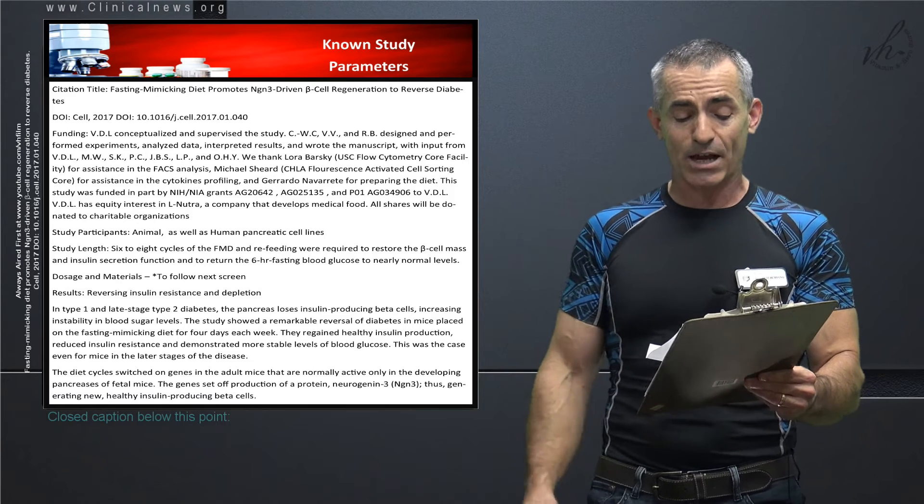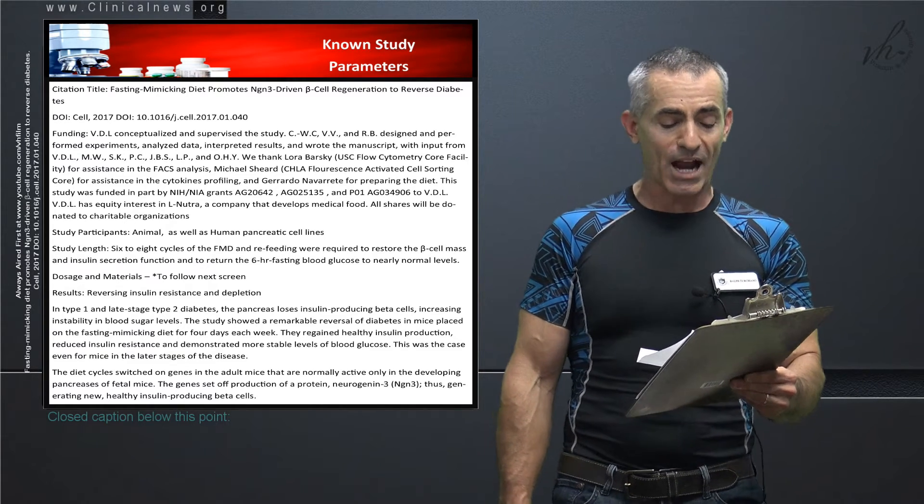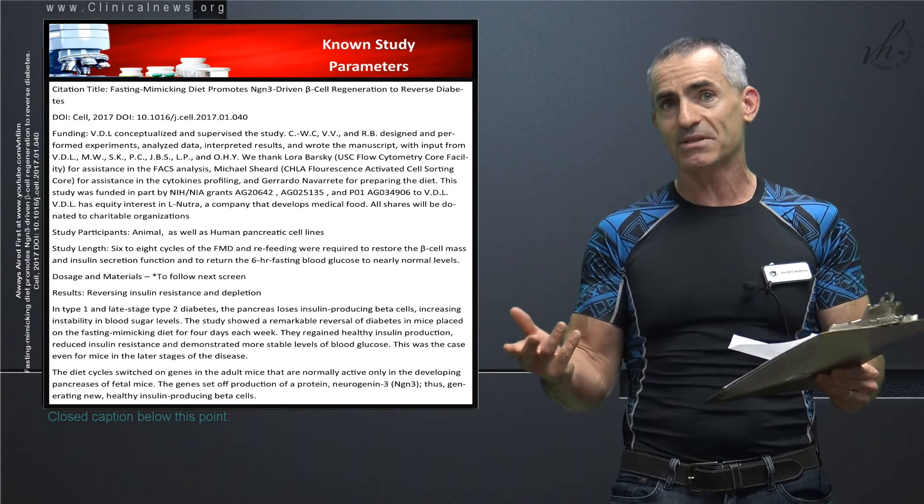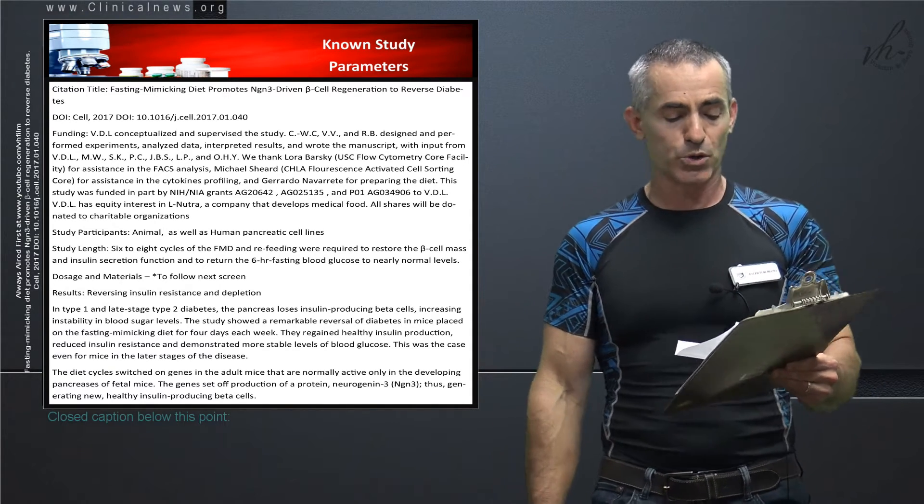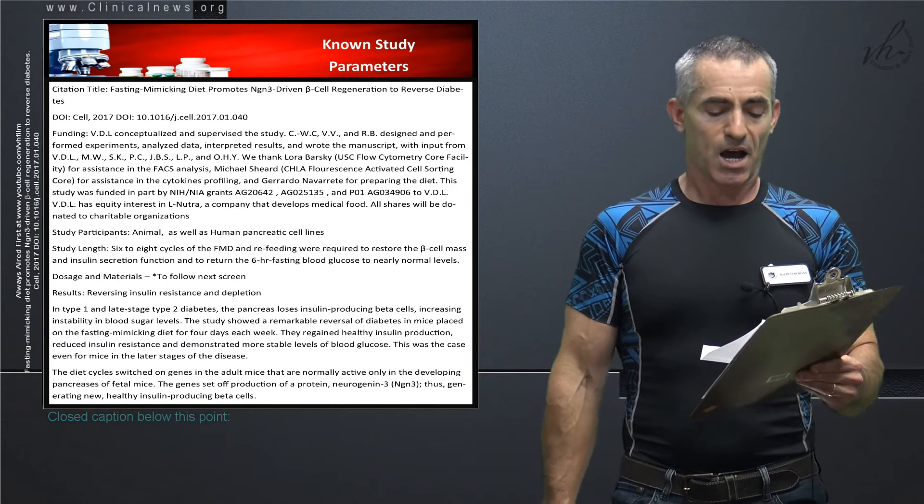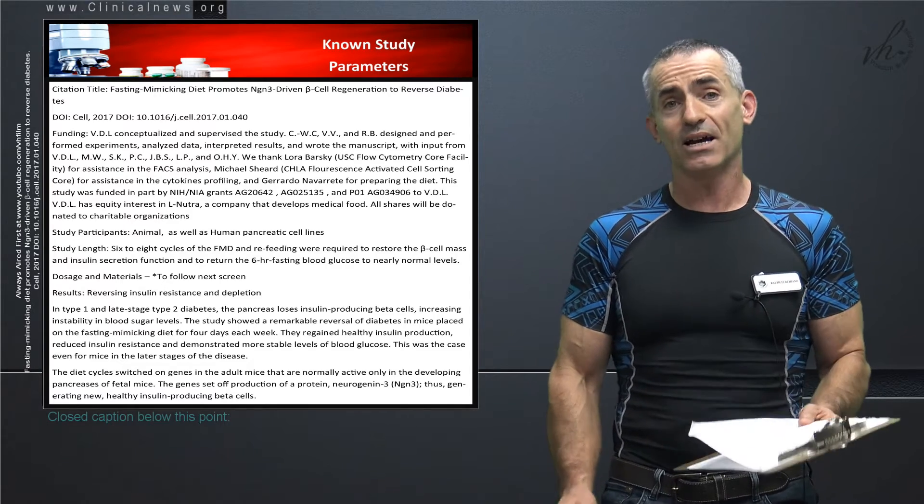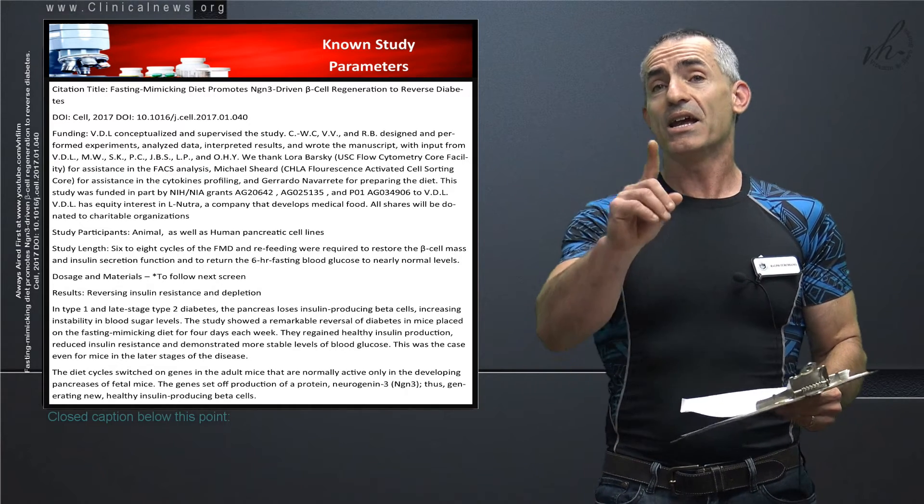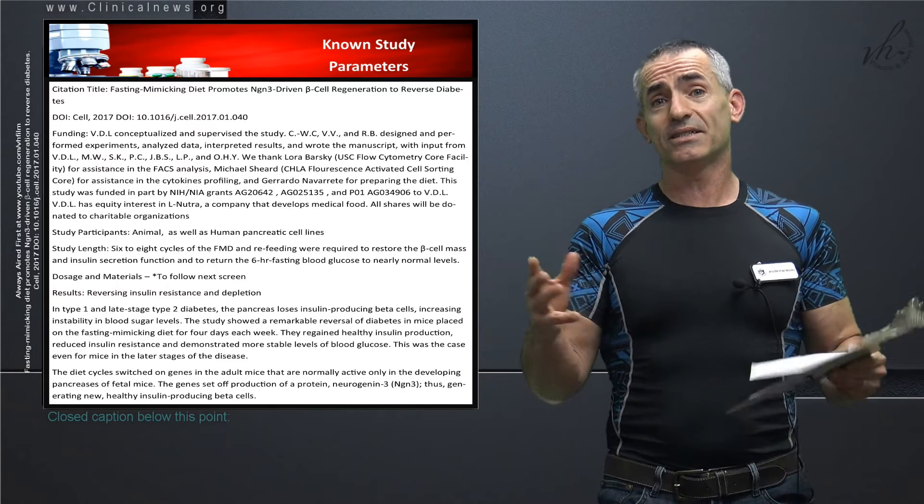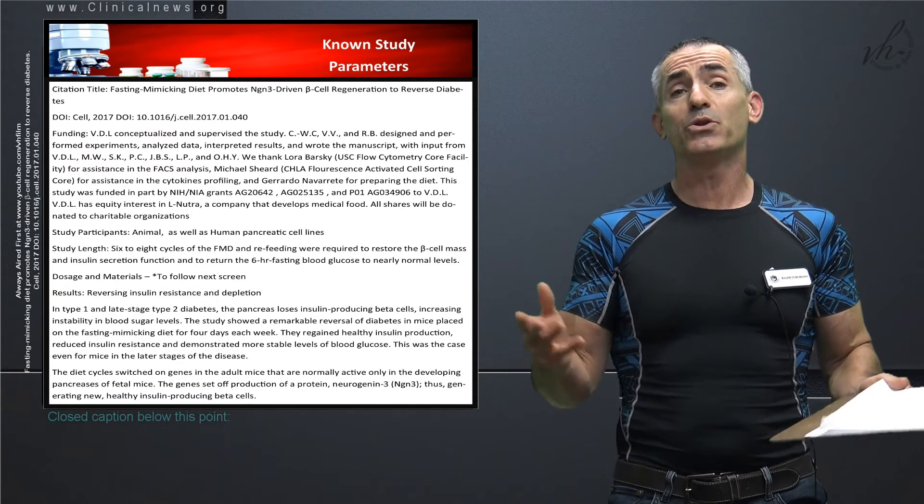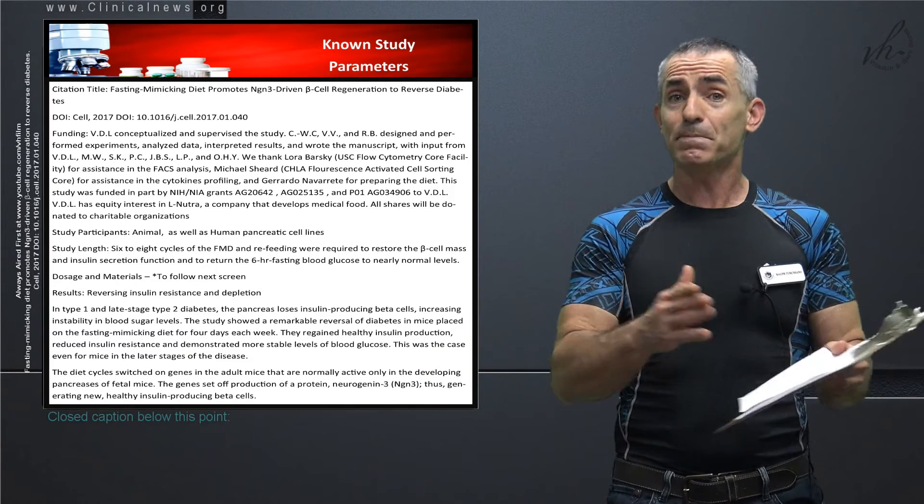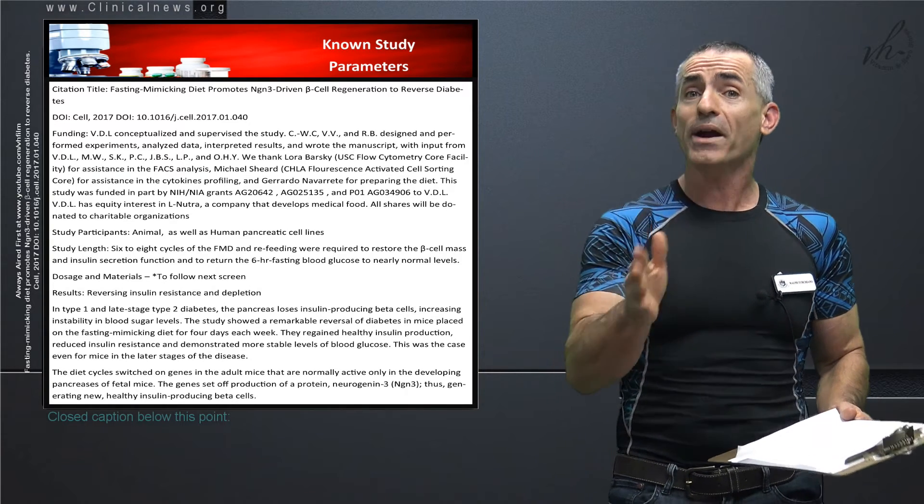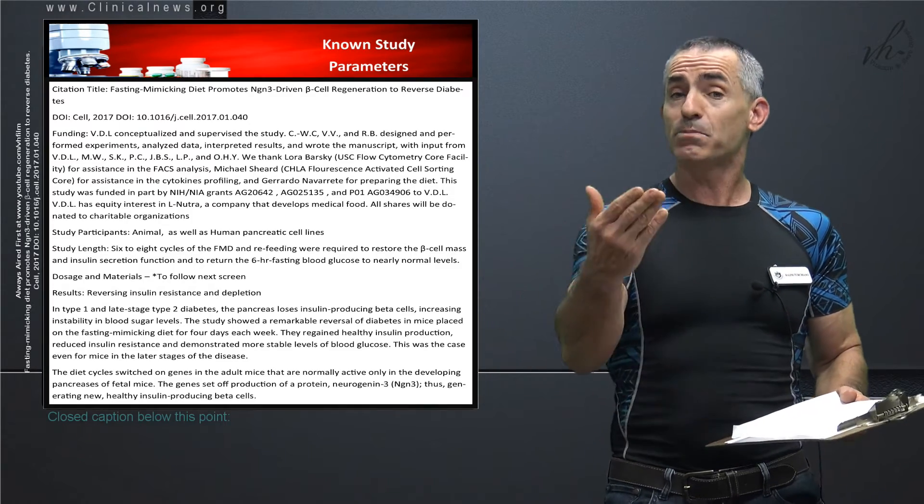The diet cycle switched on genes in the adult mice that are normally active only in the developing pancreas of fetal mice. So it kind of brings all the cells back to the beginning stage, like stem cells. The genes set off production of a protein called neurogenin or NGN3, thus generating new healthy insulin producing beta cells. So what happened is these cells basically started to reform the beta cells that were needed. When the researchers looked at the cells of the pancreas in the animals, they just found a bunch of cells sitting around doing nothing, just basically blank cells. But for whatever reason, the pancreas wasn't turning them into beta producing cells.